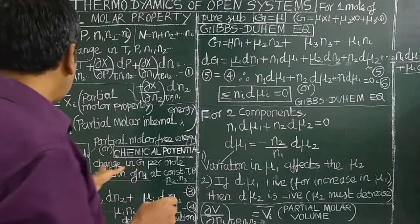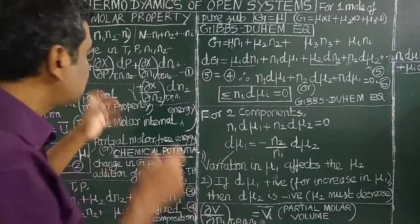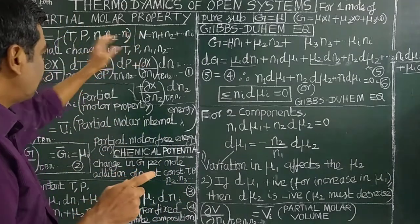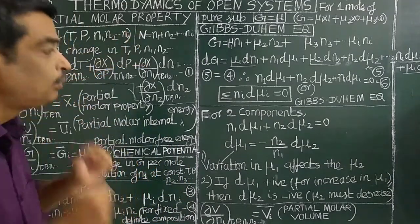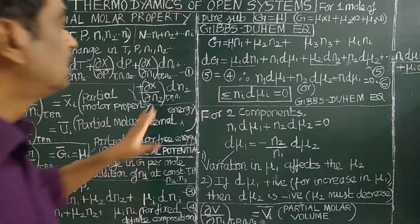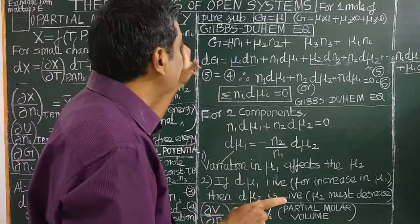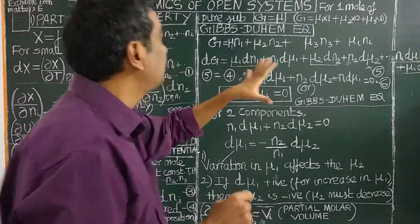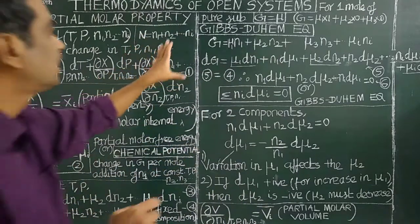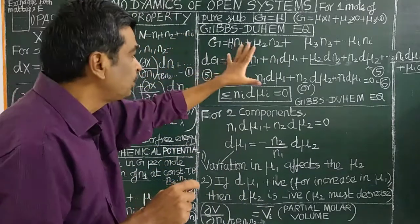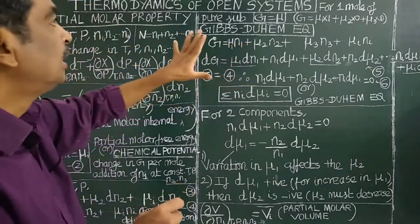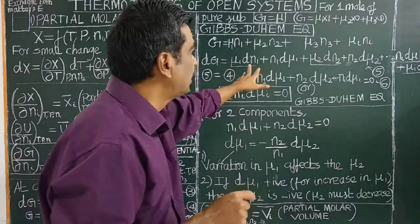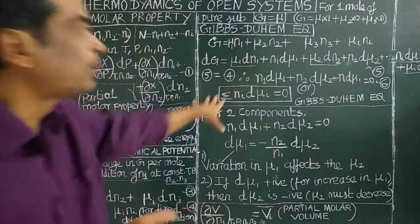Today we will cover: What is the Partial Molar Property? What is the Chemical Potential? And we will derive the Gibbs-Duhem Equation, as well as the Gibbs Adsorption Isotherm.